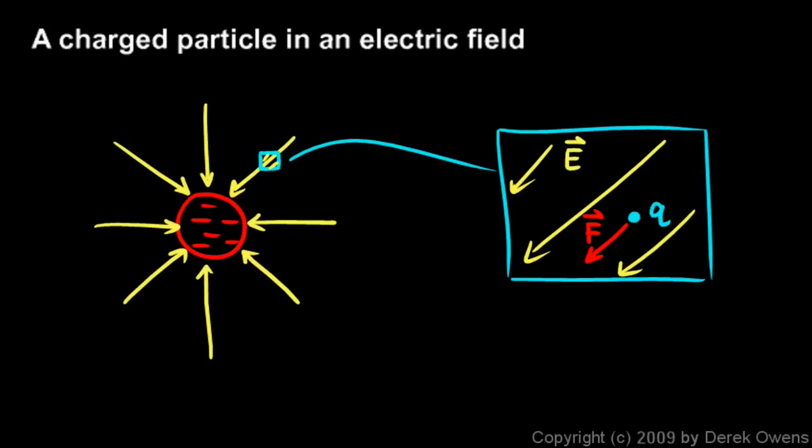And this is just the way the world is. If you have a charge in an electric field, it experiences a force. Electric fields exert forces on charged particles. That's just the way the universe is. It's very similar to gravitational fields. A gravitational field will exert a force on any mass placed in the field. And in the same way, an electric field will exert a force on any charge placed in the field. And there's an equation to describe this. The equation that relates these three things, F, Q, and E, the equation is F equals Q times E.